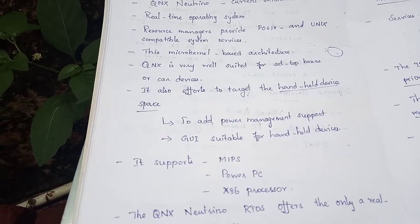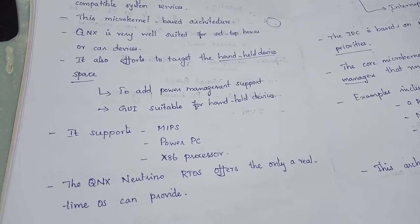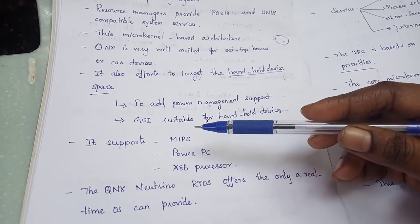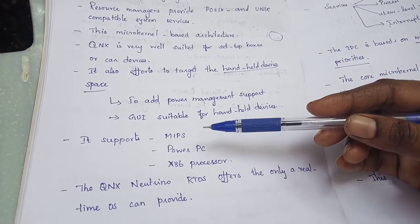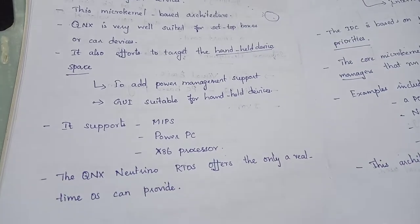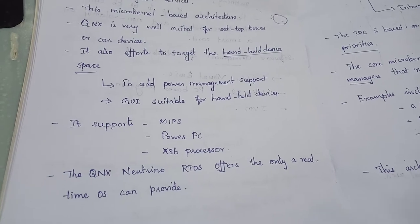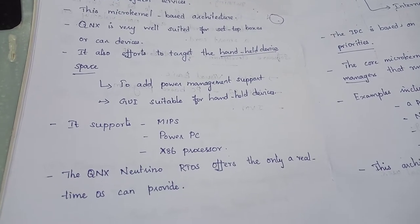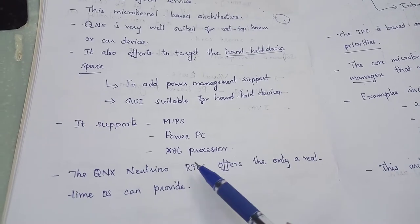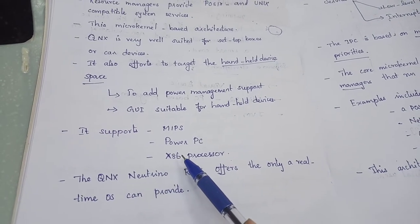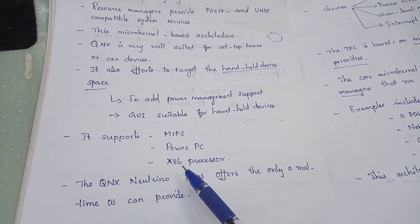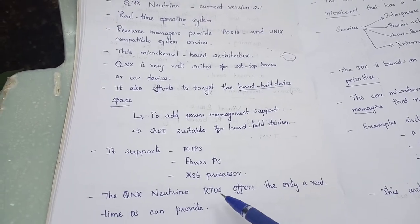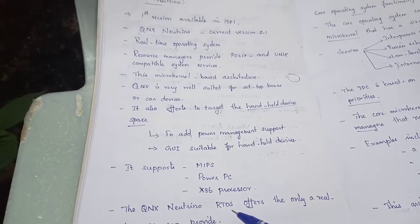QNX Neutrino also supports MIPS (Million Instructions Per Second), PowerPC, and x86 processors, including the 8086 16-bit microprocessor. All of these are supported by the QNX Neutrino real-time operating system.